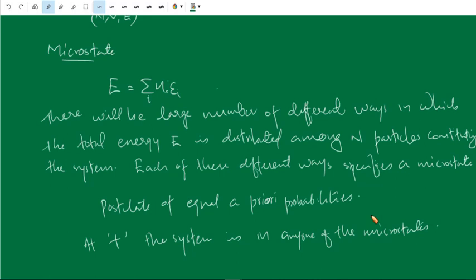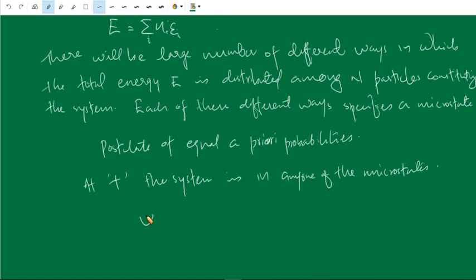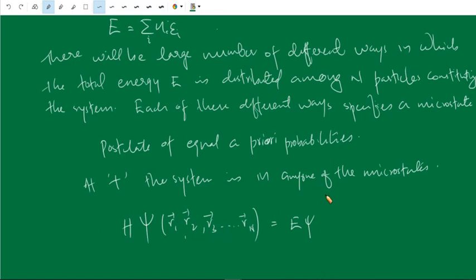Each microstate is nothing but the solution of the Schrödinger equation. There are N number of particles, and the solution of the Schrödinger equation is called the wave function — Ψ of r_1, r_2, r_3, up to r_N for an N-particle system, where r_1, r_2, r_3 are the position vectors. This is a solution of the Schrödinger equation: H Ψ equals E Ψ. There are a large number of solutions for this Schrödinger equation corresponding to a macrostate, and each of these solutions is associated with a particular microstate. Here E is the total energy or eigenvalue of the Hamiltonian H.